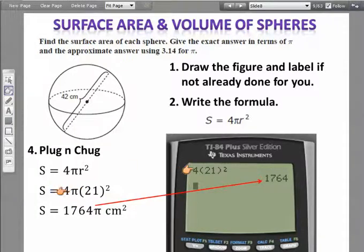So I've got 4 multiplied by 21 squared, which gives me 1764π centimeters squared for the exact answer for my surface area.